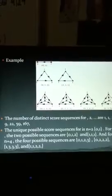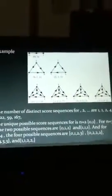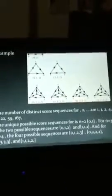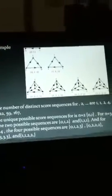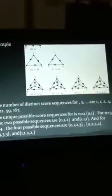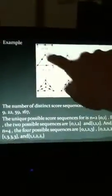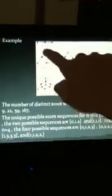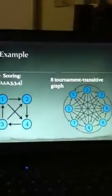These are examples of tournament graphs. The number of distinct score sequences for n equals 2, 3, 4, 5, 6, 7, 8 are 1, 1, 2, 4, 9, 22, 59, 167. The unique possible score sequences for n=2 are 0 and 1. You score from the out-degrees: this one has 1, this has 1, this has 2, and this has 0.